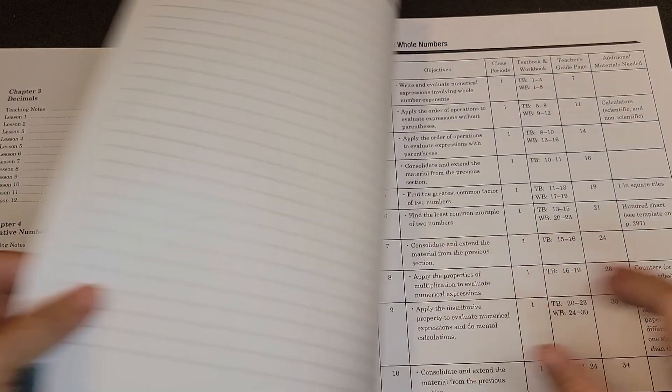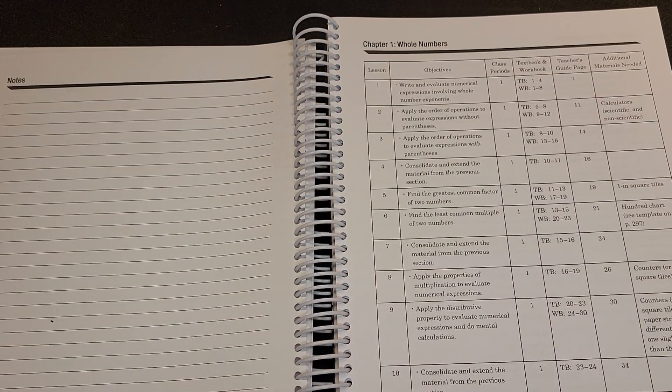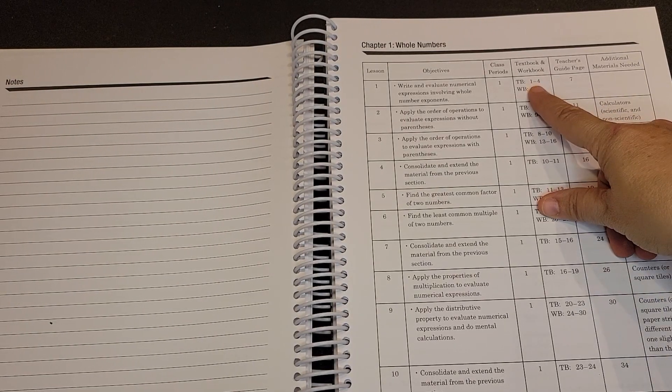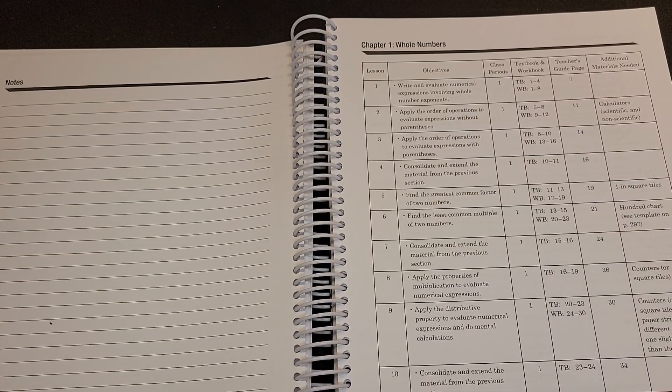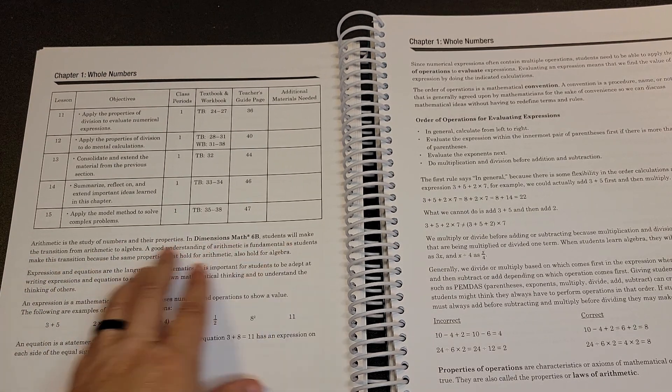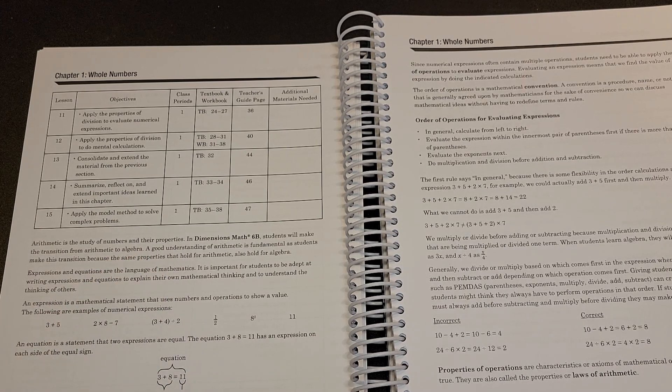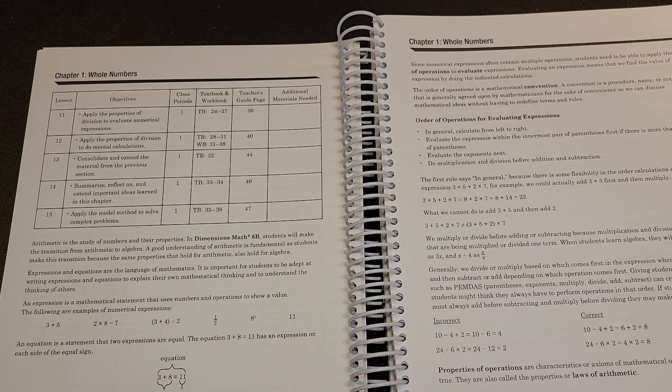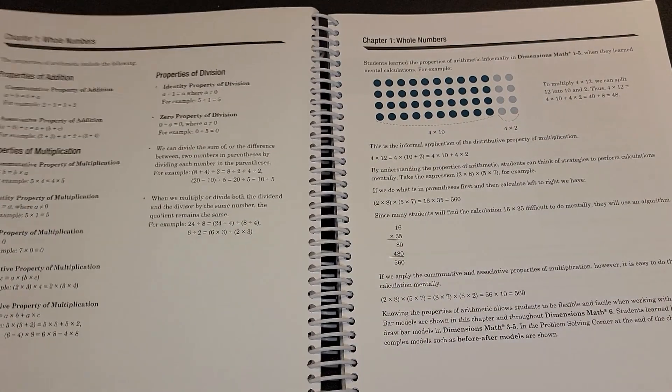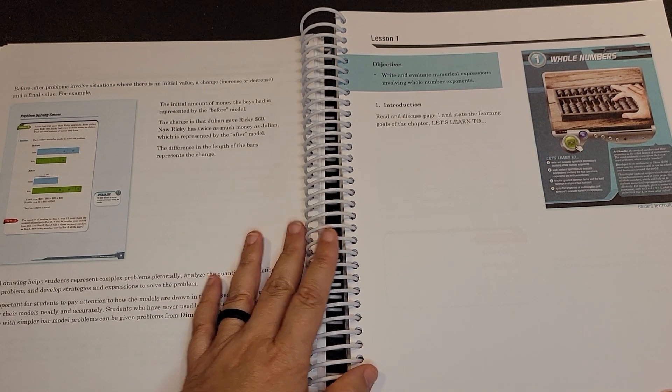When you start each chapter it will give you an overview and it will tell you the lessons and then how many class periods they are anticipating you using within each lesson. The textbook and the workbook, the teacher's guide, and then any additional materials that you need. One thing to note is in Dimensions Math 6B students will make the transition from arithmetic to algebra. So it is very good to have an understanding of arithmetic in order to move on to 6B.